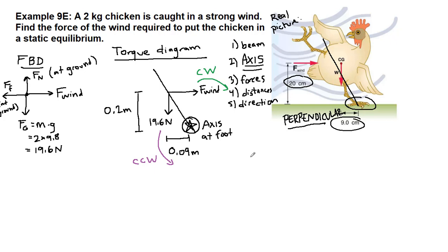So now we have the torques clockwise equal the torques counterclockwise. And we have one example of each of these. So in the clockwise direction, we have our unknown wind force times the distance associated with it, 0.2 meters. And in the counterclockwise direction, we have our 19.6 newtons times our 0.09 meters.